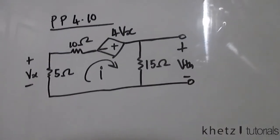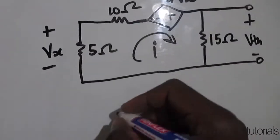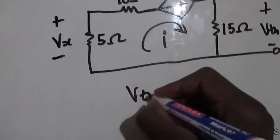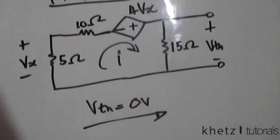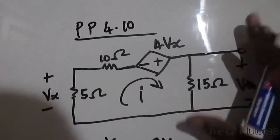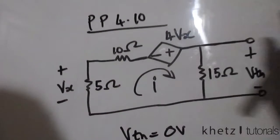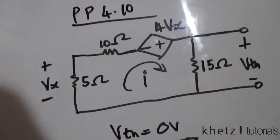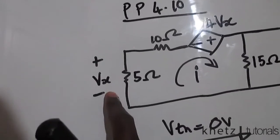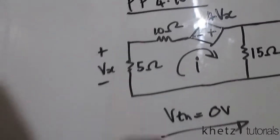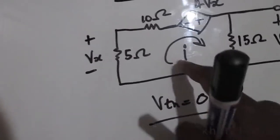From the start we can tell Vth is 0, because we do not have any independent sources which excite or supply to this circuit. You can also prove this mathematically — this is the location of vx, so looking at the orientation or the relationship with the current i.